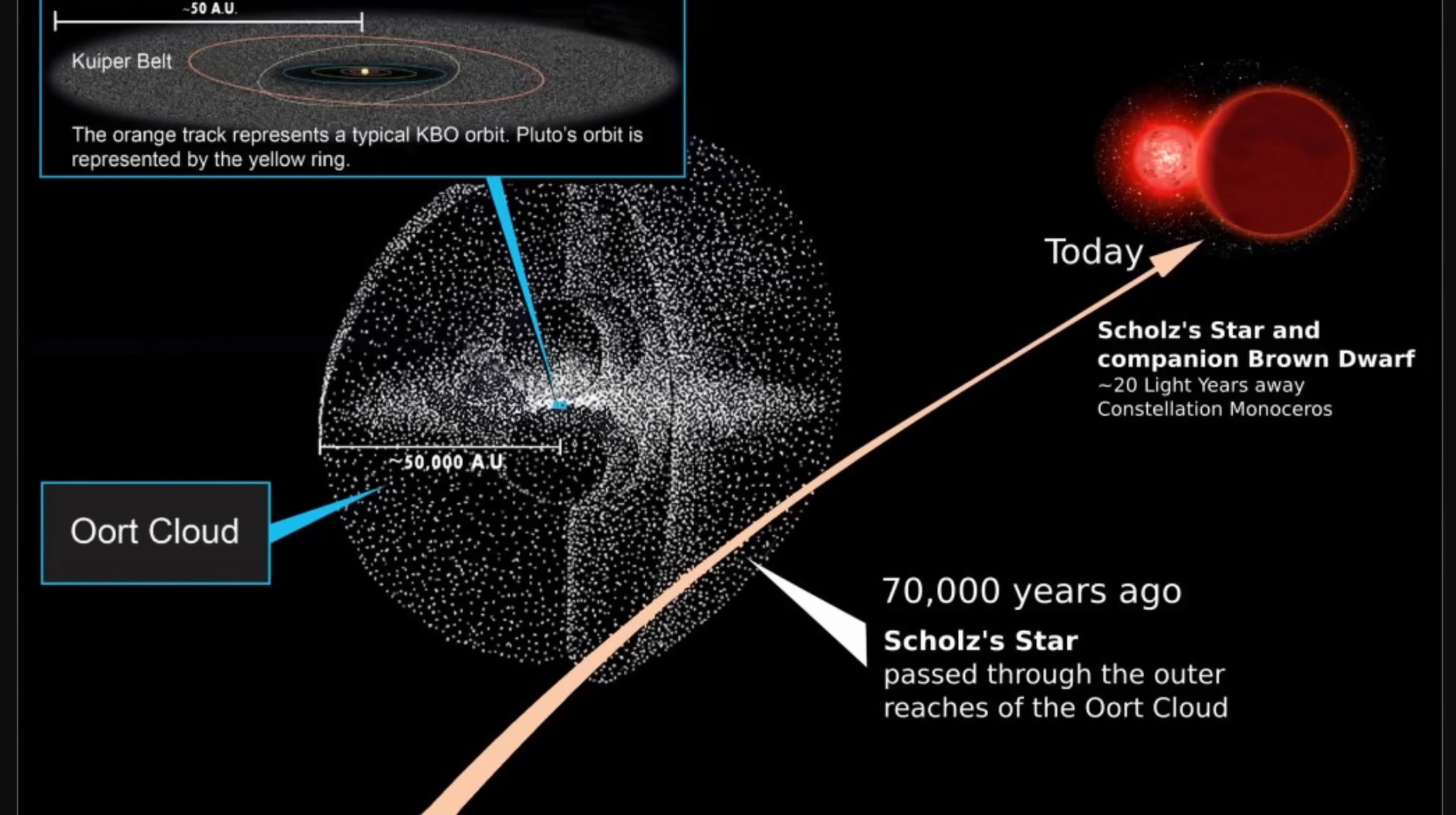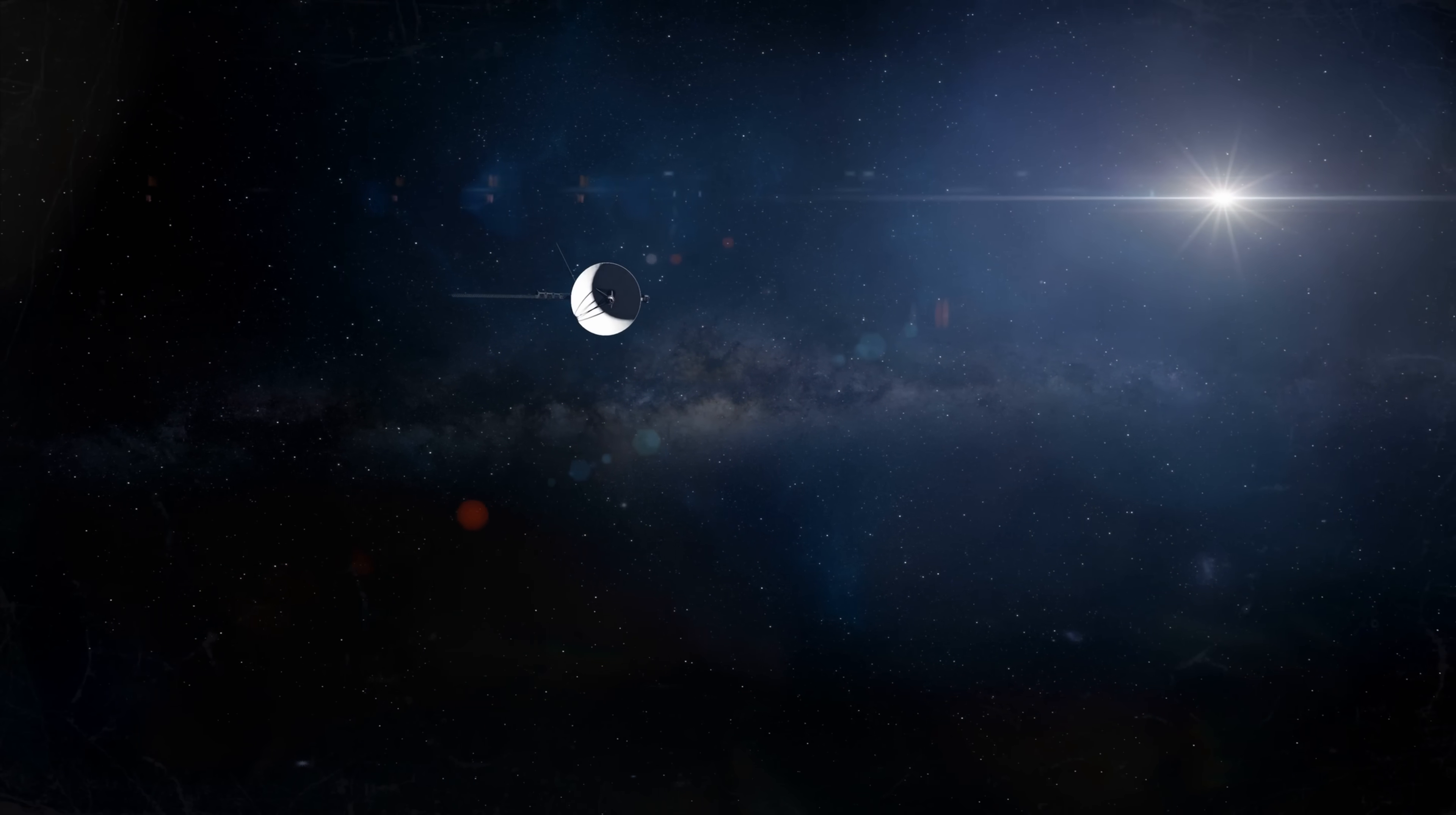The star that passed through the Oort cloud 70,000 years ago and whose disturbance most likely has not been felt yet. Essentially all of the rocks it disturbed are probably still on their way toward the inner solar system, mostly because for most of them it very likely takes a super long time to travel.